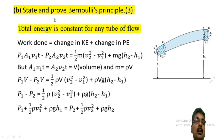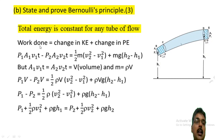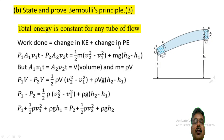The statement is: total energy is constant for any tube of flow. This is Bernoulli's principle statement. The derivation begins with: work done equals change in kinetic energy plus change in potential energy.